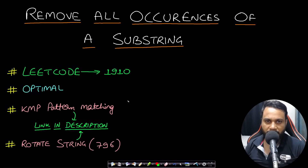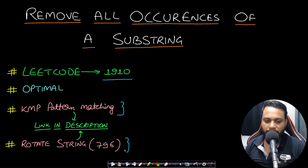Hello guys, welcome back to Take Dose. In this video we will look at the Remove All Occurrences of a String problem, which is LeetCode number 1910. A prerequisite before this is to watch my video on the KMP pattern matching algorithm. You can also consider solving the Rotate String problem from LeetCode number 796 after having solved this problem. Both the links will be in the description below.